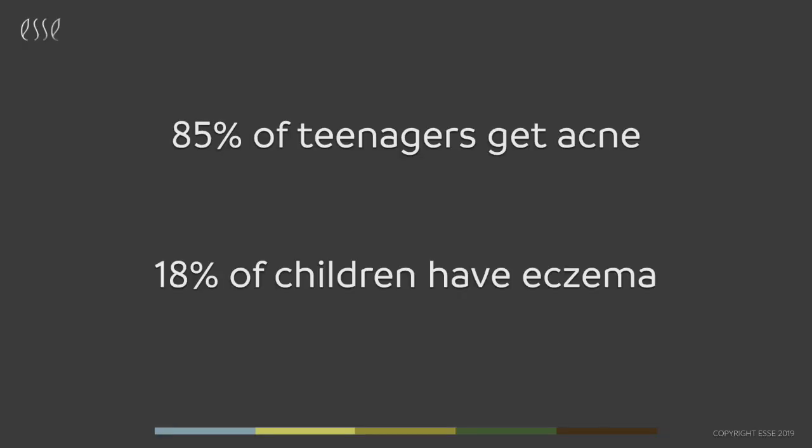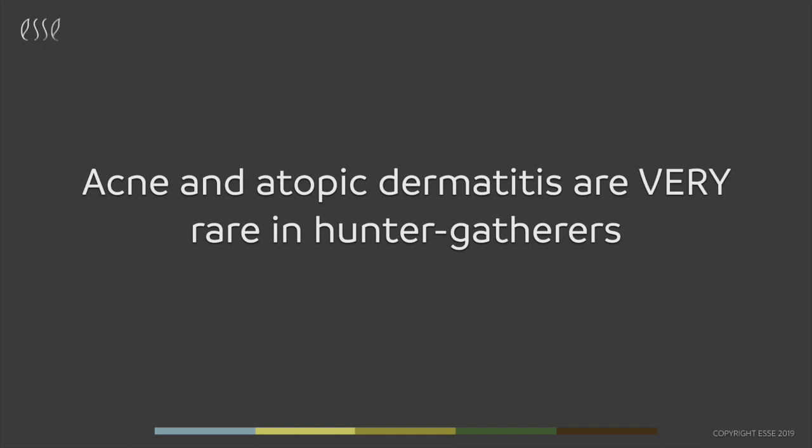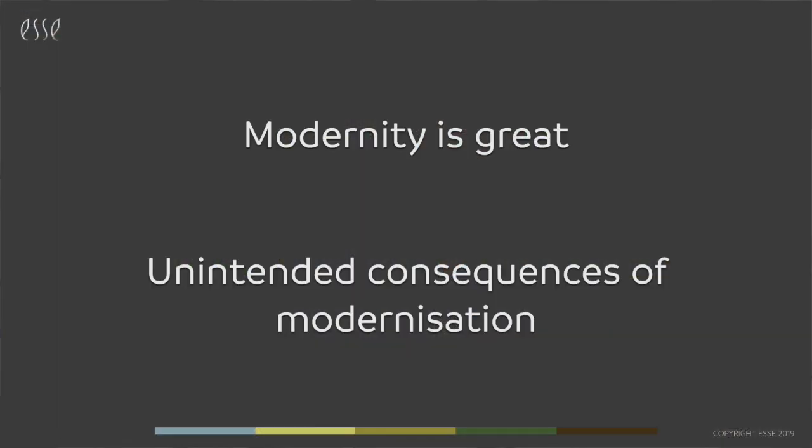Currently around 85% of teenagers get acne and around 18% of children have eczema. These two are not really found in hunter-gatherers. One basic contention of ours is that if we manage to shift our skin microbiome back to its ancestral state, we should see these diseases of modernity resolve.